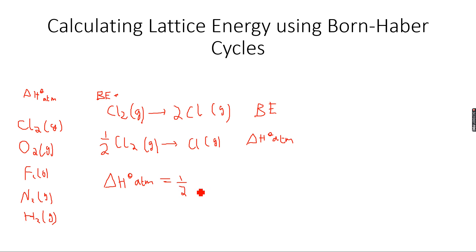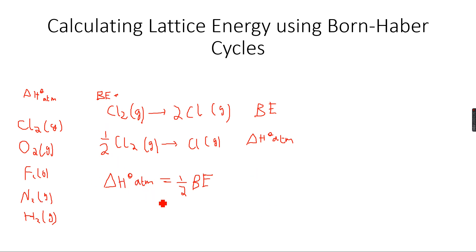ΔH°ATM is half of the bond energy because in bond energy we get 2 moles of gaseous atoms, and in atomization we get 1 mole — so it's half. Sometimes they will not give you the enthalpy change of atomization of diatomic molecules that exist as gases in the standard state. You will be expected to go to the data booklet, look at the bond energy values, and calculate ΔH°ATM using those values. So ΔH°ATM = ½ × bond energy.